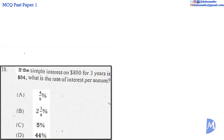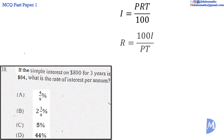Question 20. Simple interest I is equal to the principal P multiplied by the rate R multiplied by time T, all over 100. Making R the subject of the formula gives R is equal to 100 times the interest I, divided by the principal P multiplied by the time T.